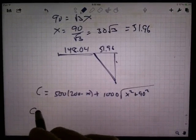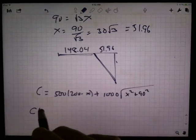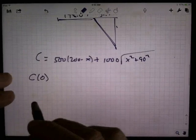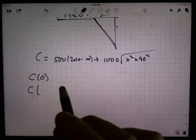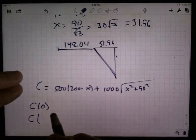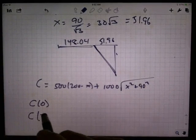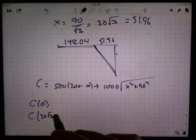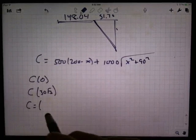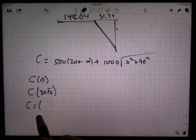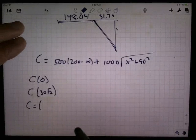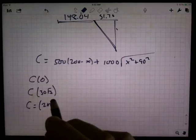So I need to check the cost at the endpoint 0. I need to check the cost at my critical point. What is my critical point? 30 times the square root of 3, and I need to check the cost at the other endpoint, which was 200.